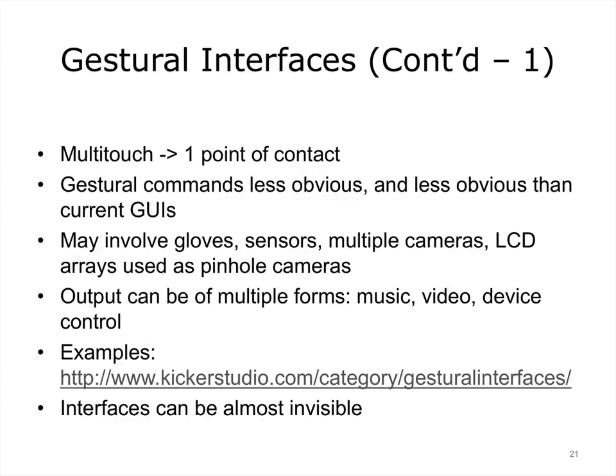Gestural components for other applications may be less than obvious and more indirect. An example is the clapper interface for turning off lights, where the user must somehow be notified that this capability exists. Multi-touch likewise has more than one point of contact between the user's body and the screen, and this must be communicated to the user. Some gestural interfaces may involve other devices such as gloves, sensors, multiple cameras, LCD arrays used as pinhole cameras, and so on.